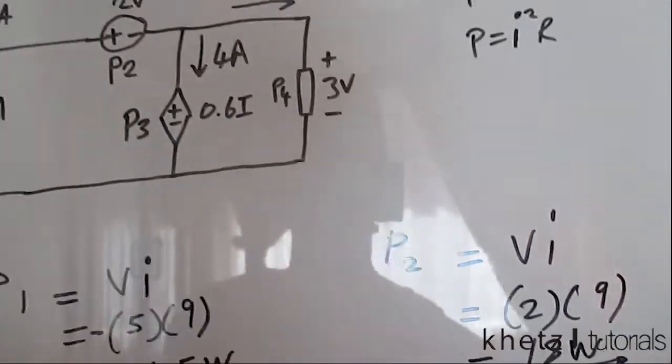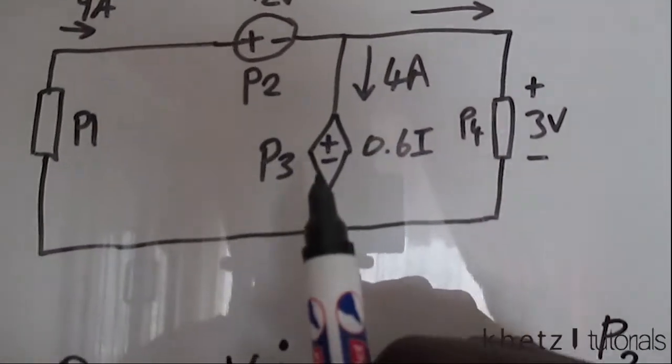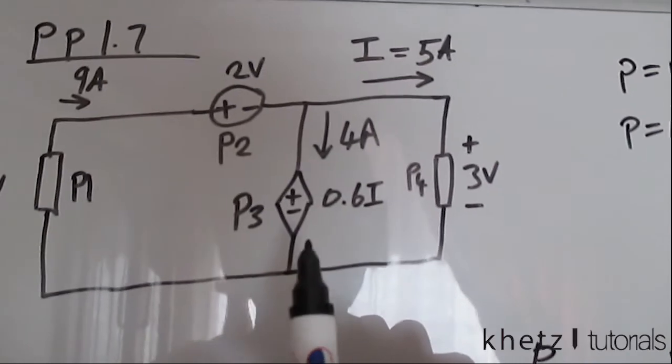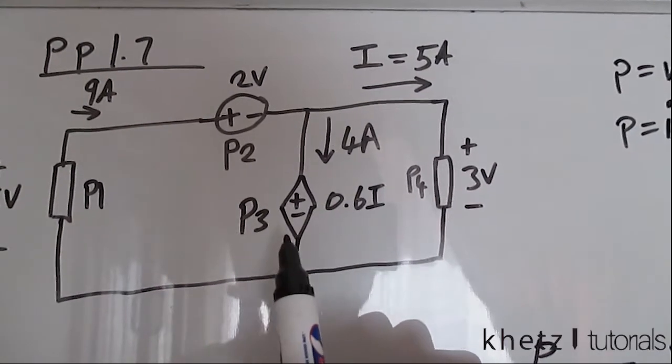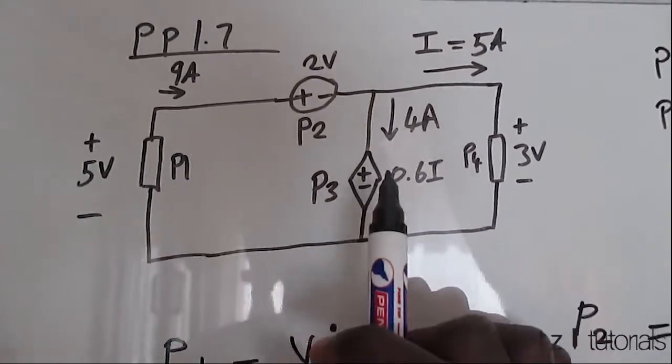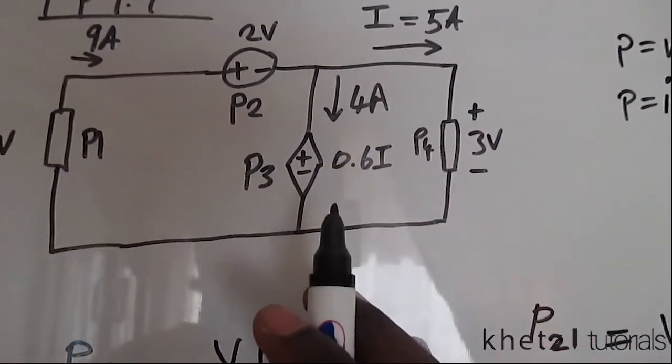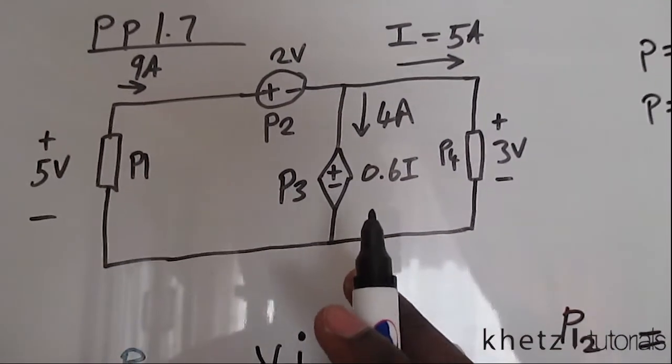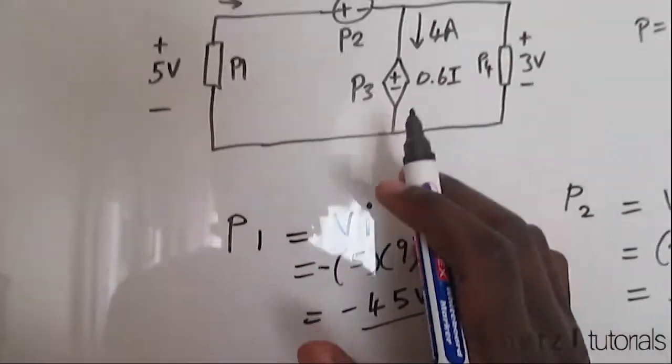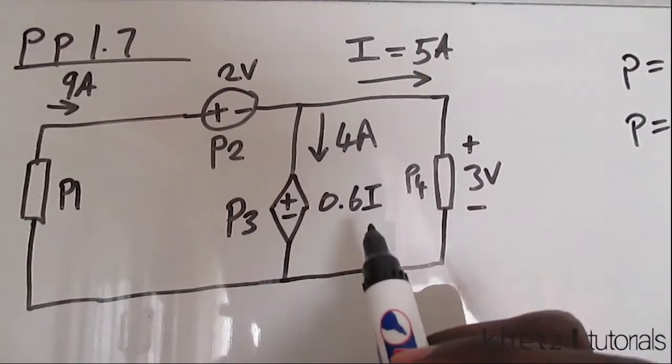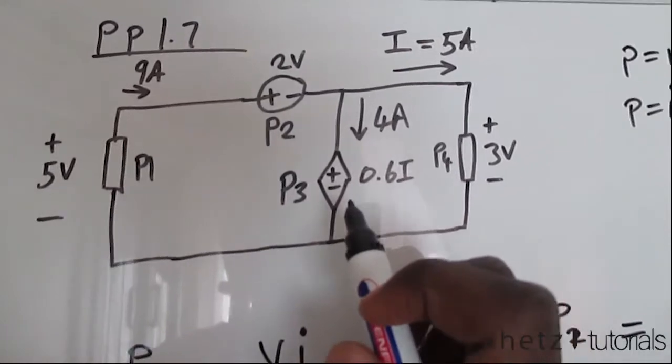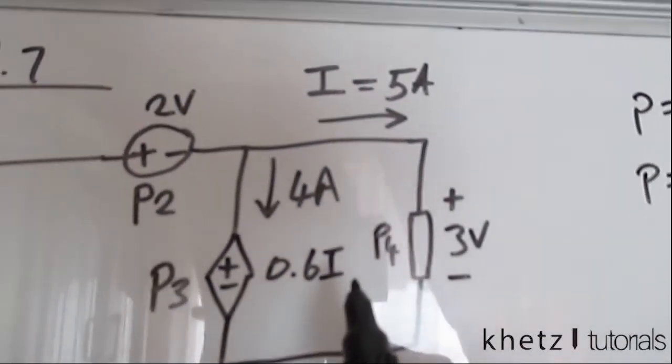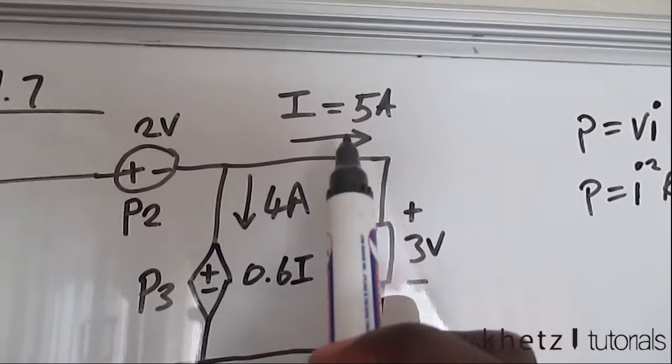Moving on to P3. P3 is another voltage source. This one is current dependent. It's a current dependent voltage source. So its value is 0.6 I and I is given up here. It's 5 amps.